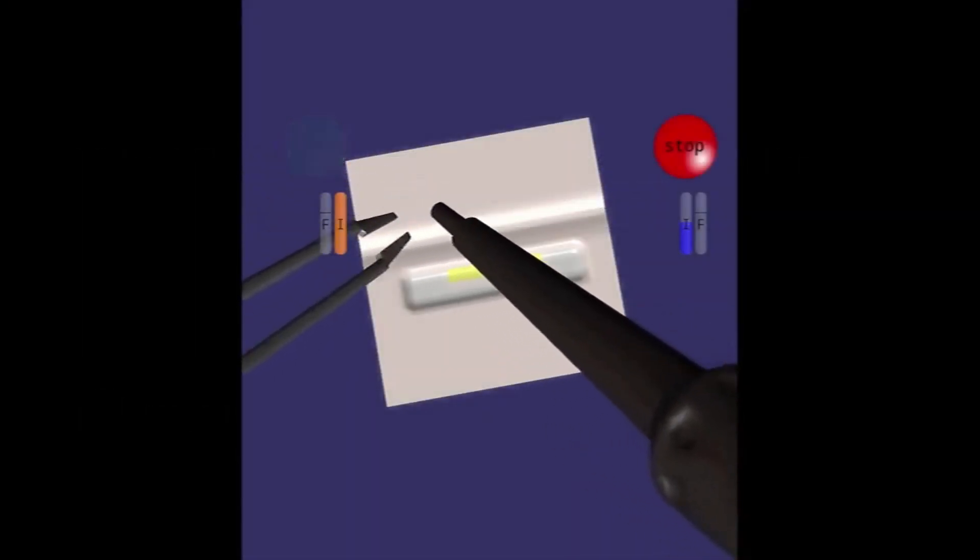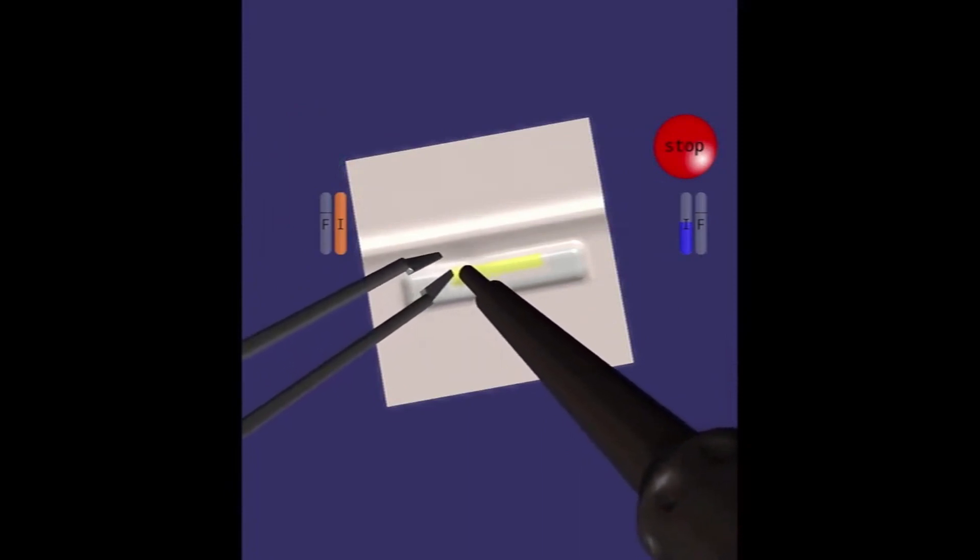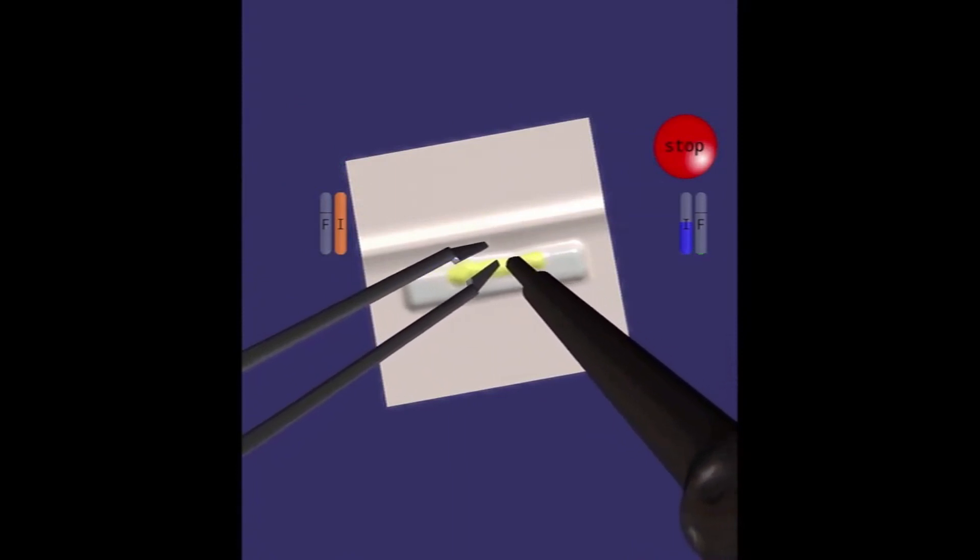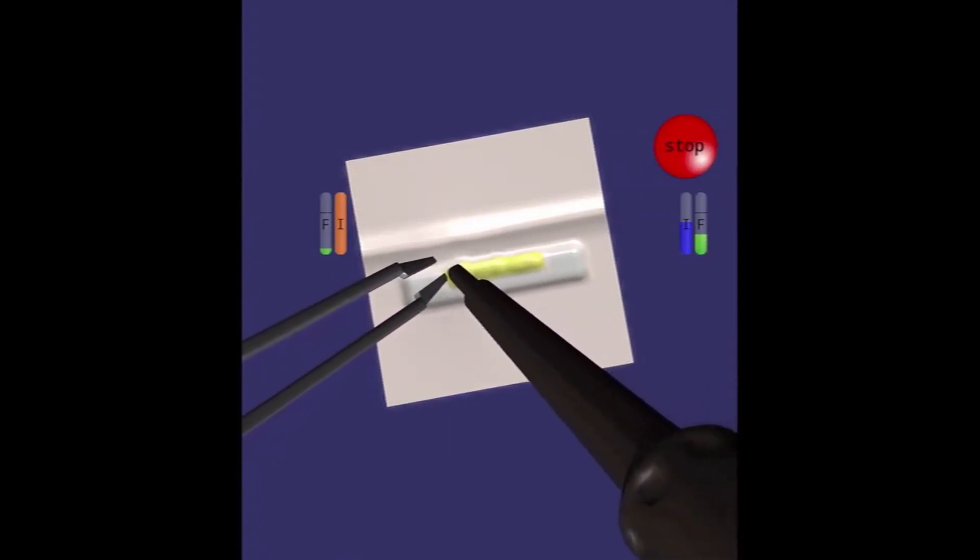In the practice scenario, participants' objective is to resect the yellow tumorous lesion with minimal bleeding and damage to the surrounding healthy tissues within 5 minutes.